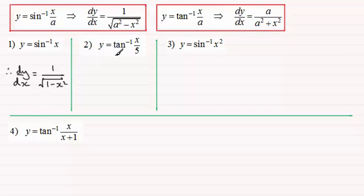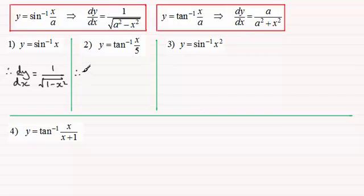For number 2, y equals the inverse tan or arc tan of x over 5. This is fairly straightforward — the constant a is 5. So from our result, all we need to do is substitute a as 5. Therefore dy/dx equals a, which is 5, all divided by a squared — that's 5 squared, which is 25 — plus x squared.